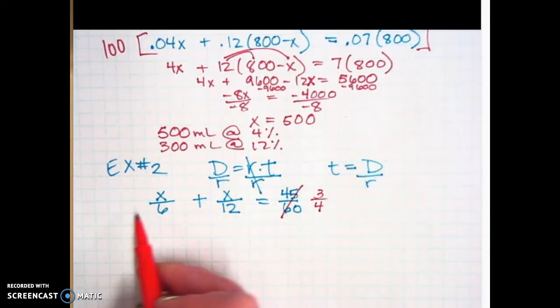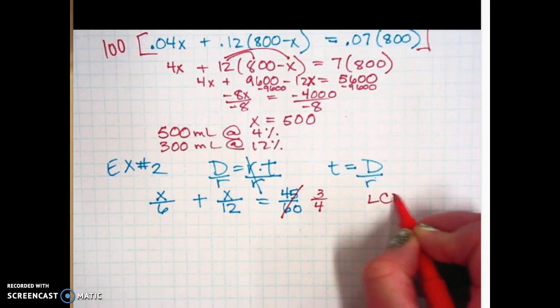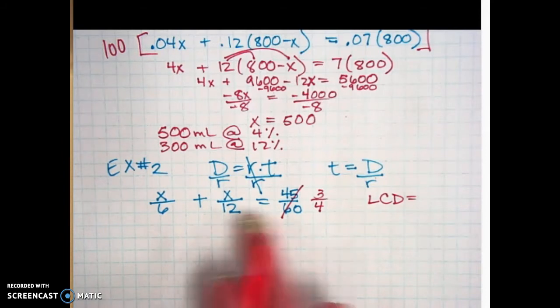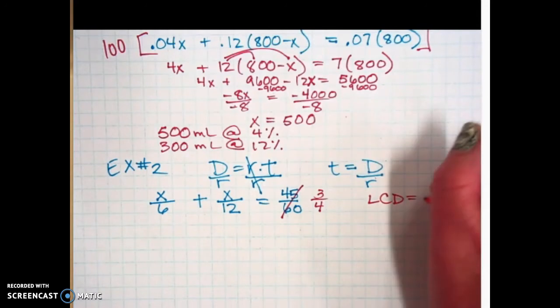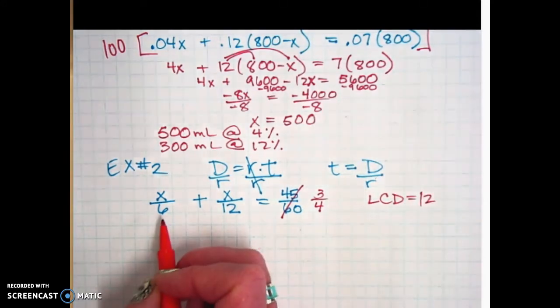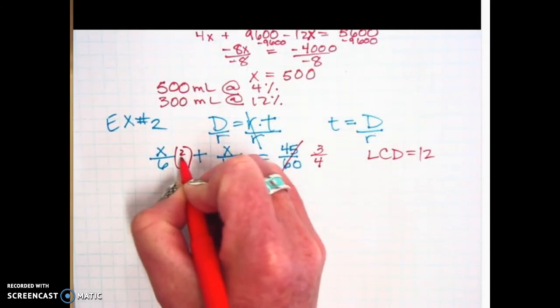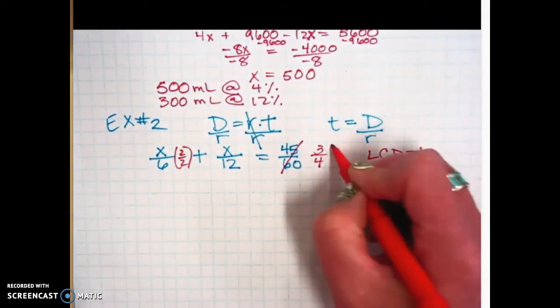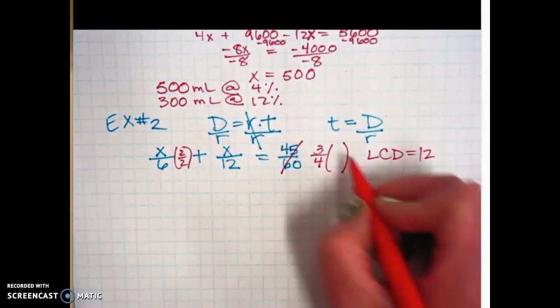Now we can look at these three terms and we see we're going to need a least common denominator in order to solve this. So six, 12, and four all go into what evenly? 12. So the least common denominator is 12. So I'm going to take this first term and multiply it by two over two. What do I need to multiply the second term by? Nothing. And what do I need to multiply over on the other side of the equal side by? Three. So three over three.